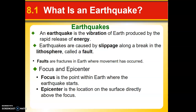Two terms that we use when we discuss earthquakes are focus and epicenter. The focus is the point inside the earth where the earthquake is actually beginning — anywhere from one to two kilometers down to seven to ten kilometers deep. The epicenter is the location on the surface directly above the focus, like the point on the map you could identify. For example, we say it started in New Mexico — that's considered the epicenter.